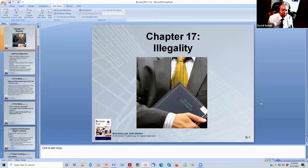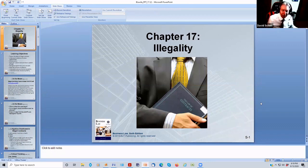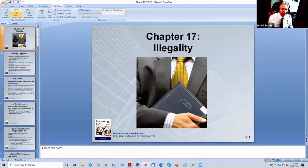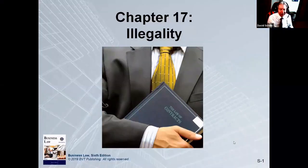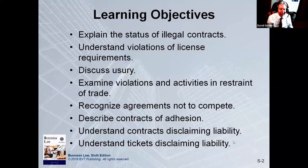This is Dr. David Schein and welcome to Business Law 101. Folks, illegality — we're going to do this relatively quickly because this is pretty straightforward. You can't have a valid contract if it's for an illegal purpose. We're going to talk about a couple nuances around this, but it's really not that difficult a topic and it's not a difficult chapter. So let's take a quick look at chapter 17 on illegality.